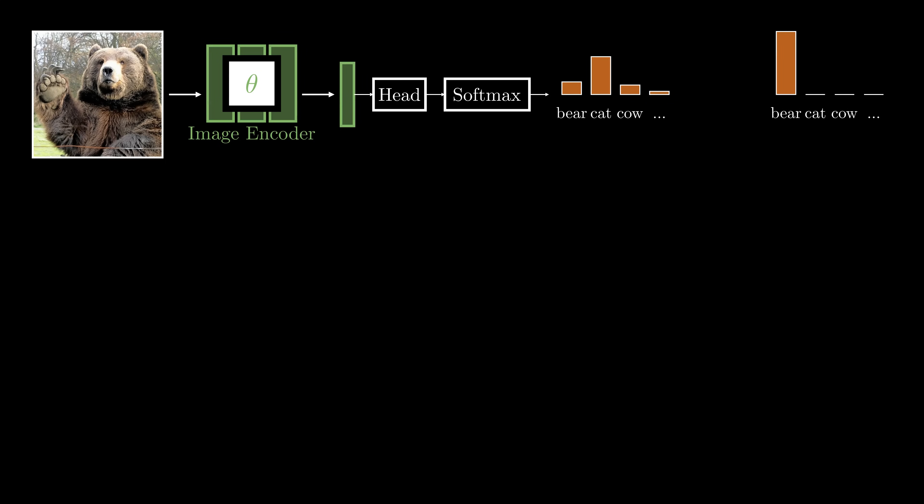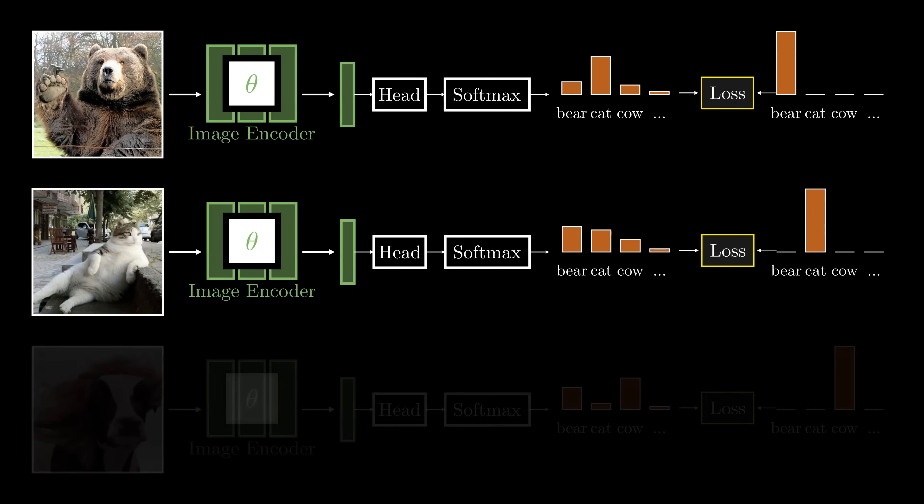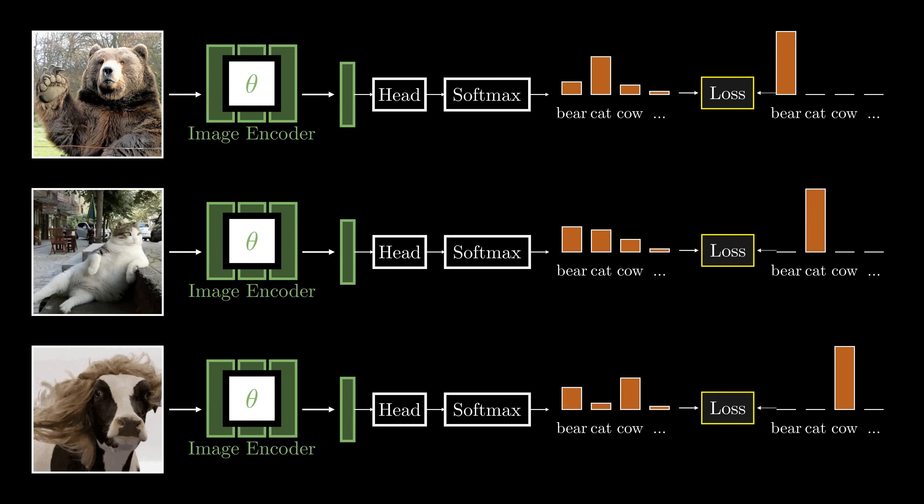The true label is a one-hot vector. We train the model to make its predicted probabilities match this label by minimizing cross-entropy loss. This loss measures the difference between the predicted probability distributions from the softmax layer, and the actual one-hot encoded labels.